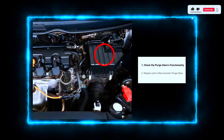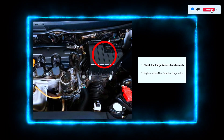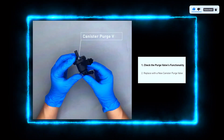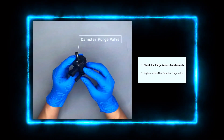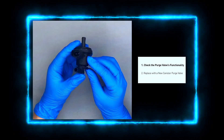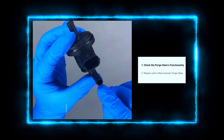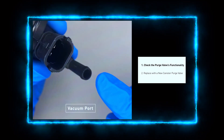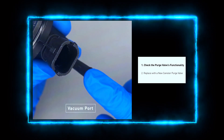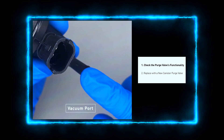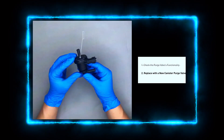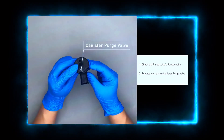Step two: inspect the EVAP purge control valve. The location can vary by car model, so consult your repair manual or do a quick web search to find it. With the engine running, carefully place your finger over the vacuum hose connected to the valve. You should feel a slight suction. If not, the valve might be stuck and need replacing.